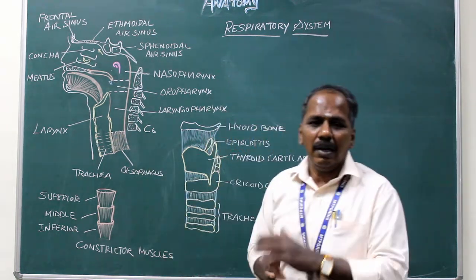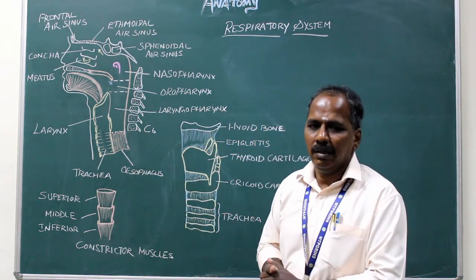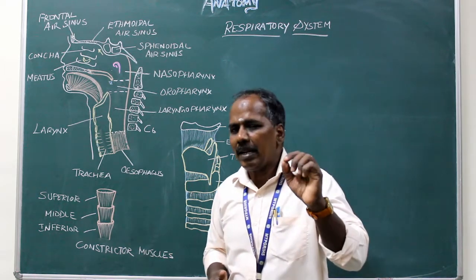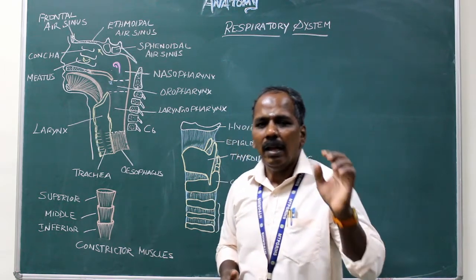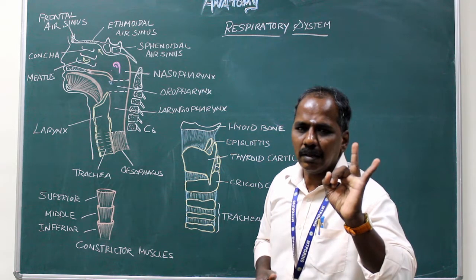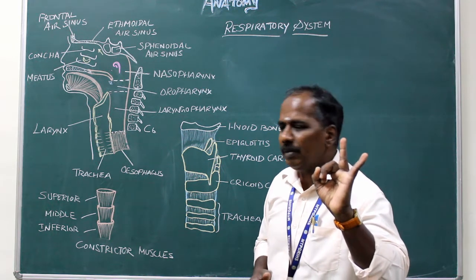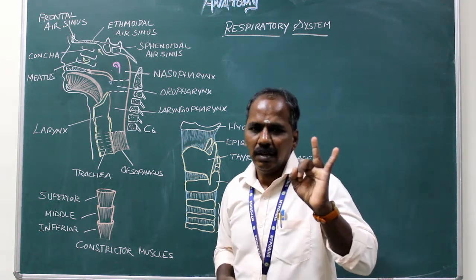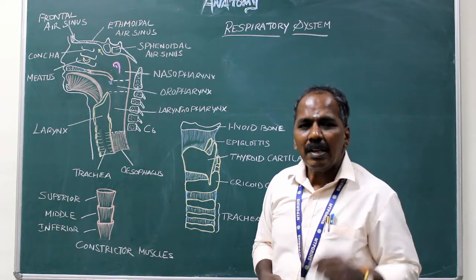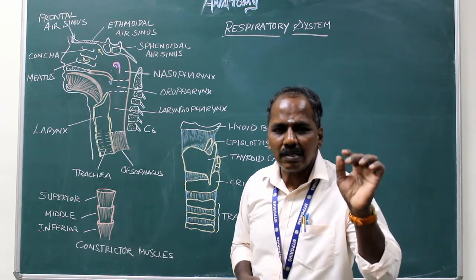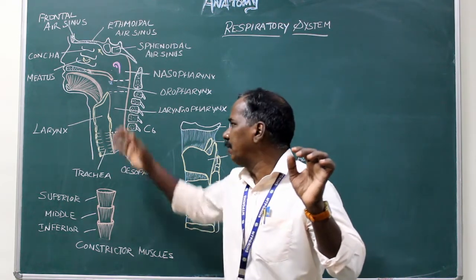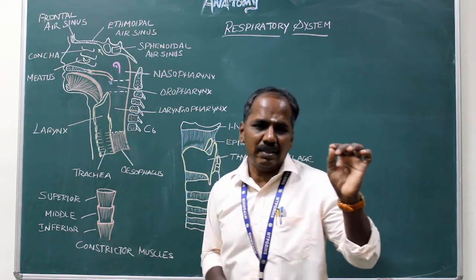Blood supply: The pharynx is supplied by the ascending pharyngeal artery and the tonsillar branch of the facial artery. Venous drainage is via the pharyngeal venous plexus.